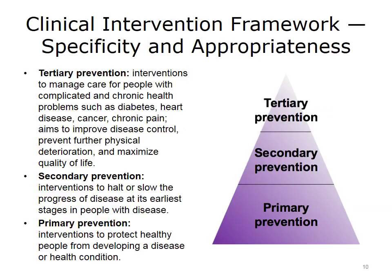In the clinical intervention framework, we have a level of specificity and appropriateness for each level of intervention. Starting at the bottom of the pyramid, we find primary prevention—applying population health interventions to protect healthy people from developing a disease. In secondary prevention, interventions are aimed at halting or slowing disease progress at its earliest stages in people who may be at risk. In tertiary prevention, we target interventions to manage care for people with complicated or chronic health problems such as diabetes, heart disease, cancer, and chronic pain, aiming to improve disease control, prevent further deterioration, and maximize quality of life.